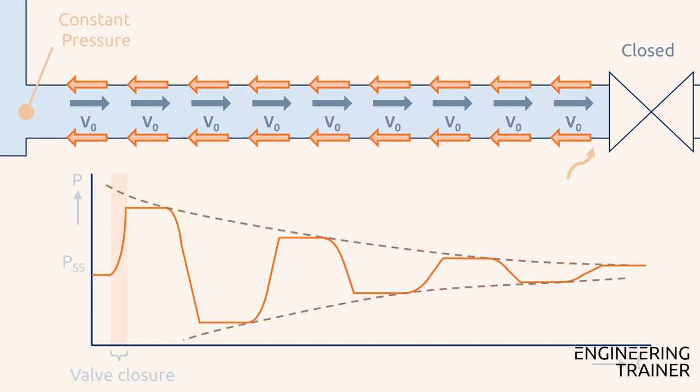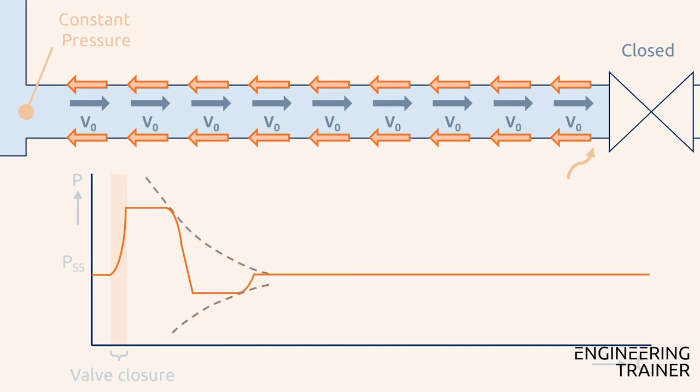Note that for flexible systems like a fire hose, this dampening can happen within the first one or two waves, since energy is quickly lost because of the deformation of the hose.